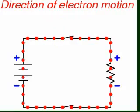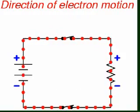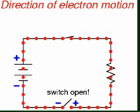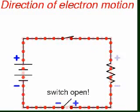An important principle to realize here is that it doesn't matter where the break occurs. Any discontinuity in the circuit will prevent electron flow throughout the entire circuit. Unless there is a continuous unbroken loop of conductive material for the electrons to flow through, a sustained flow simply cannot be maintained.